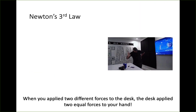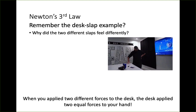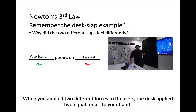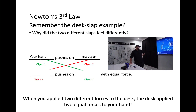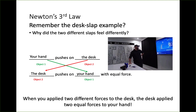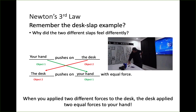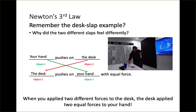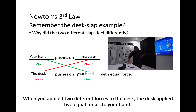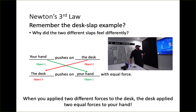How about the desk slap example — why did the two slaps feel differently? Your hand (object one) pushes on the desk (object two), and in turn the desk is pushing back on your hand with equal force. At the same time you're slapping the desk, the desk is technically slapping you. When you applied a light slap and a firm slap, the desk applied the same amount of force back onto your hand in each instance.